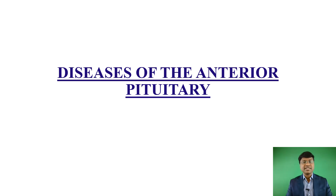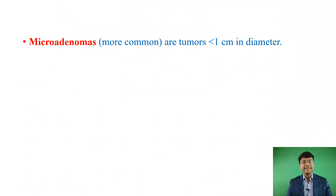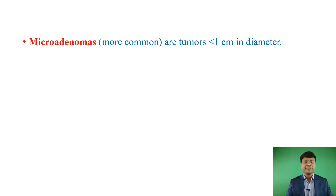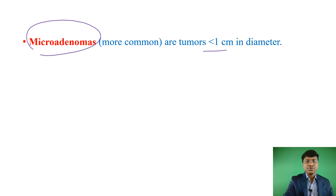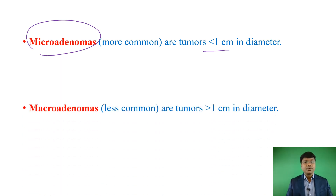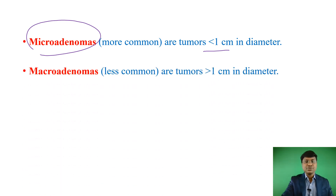In this session, I will be discussing about the tumors of the anterior pituitary — micro adenomas and macro adenomas. The difference between these two is mainly the size of the tumor. Micro adenomas are less than one centimeter, whereas macro adenomas are more than one centimeter in size.